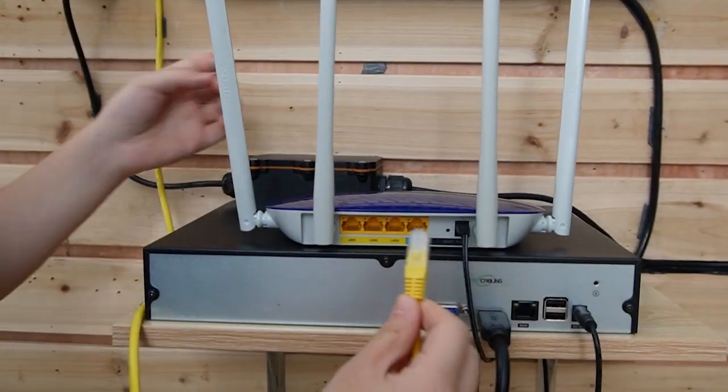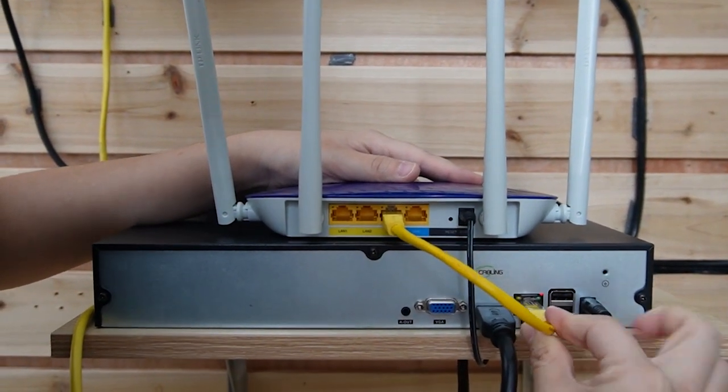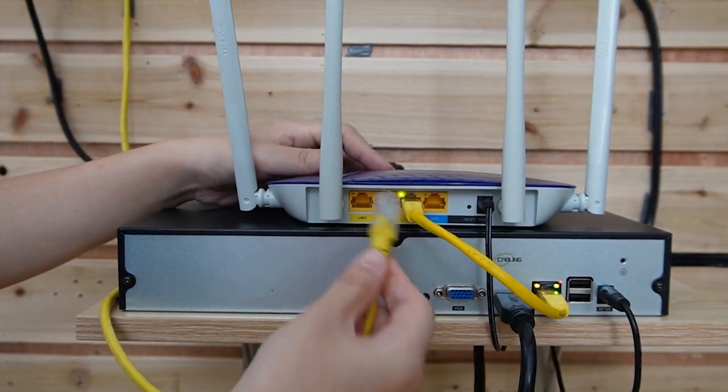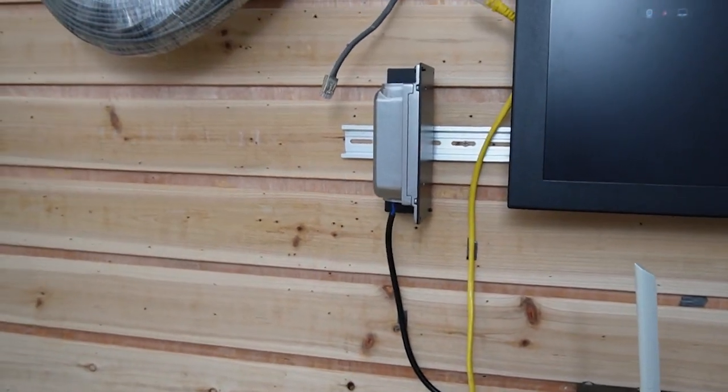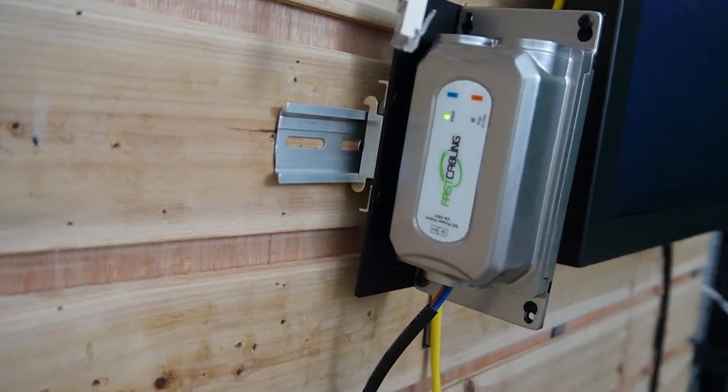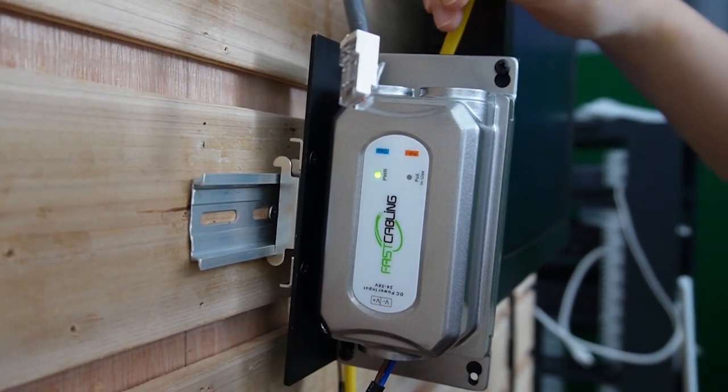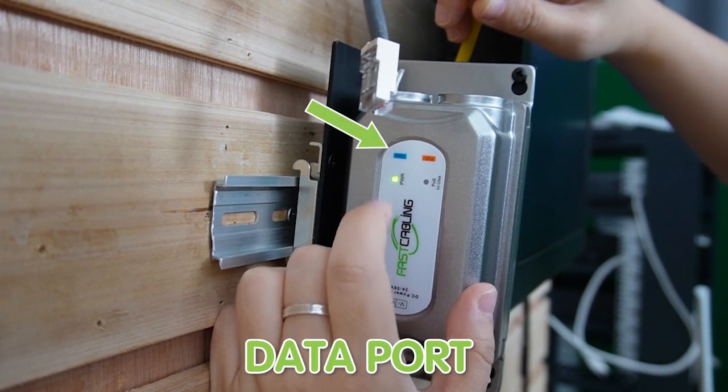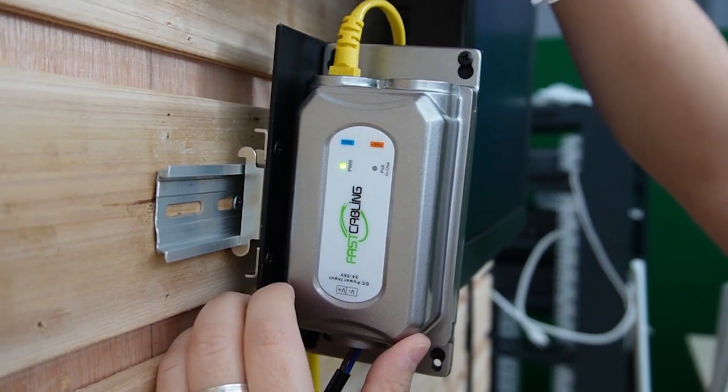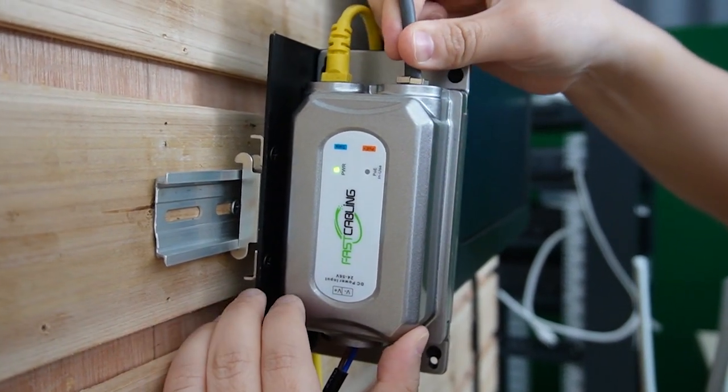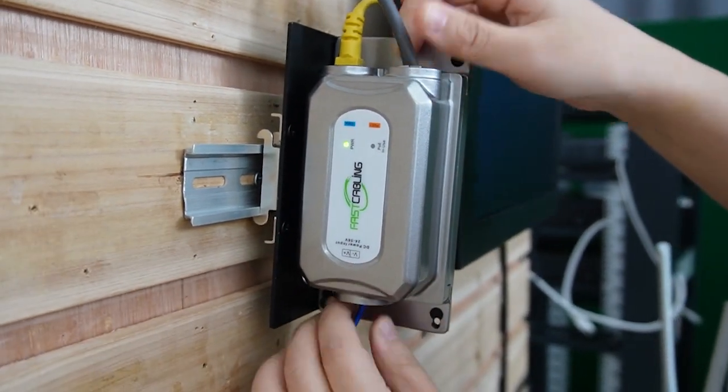First, I'll connect our router with the network video recorder. And then I'm going to use another Ethernet cable here to connect the router to our PoE injector. This 30W PoE injector is already powering up. This is the cable from the data. So let's plug it into the data port. And then this is 100 meters Ethernet cable. Let's plug it into the PoE output port.